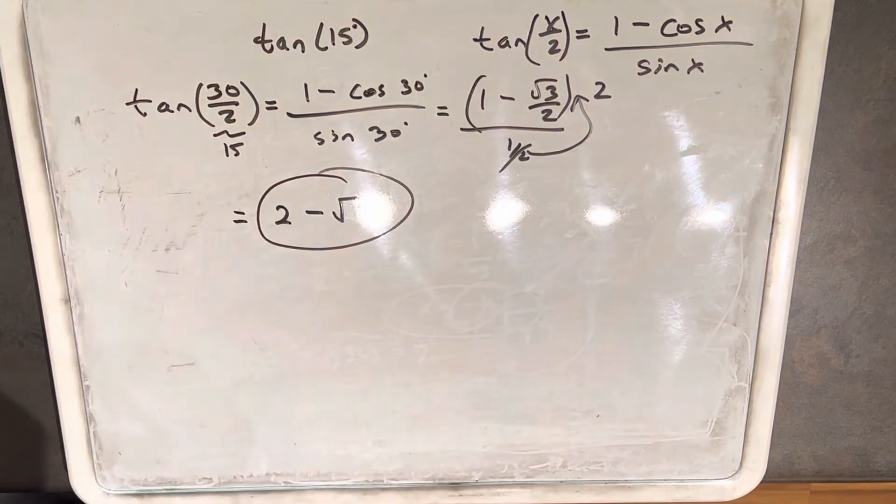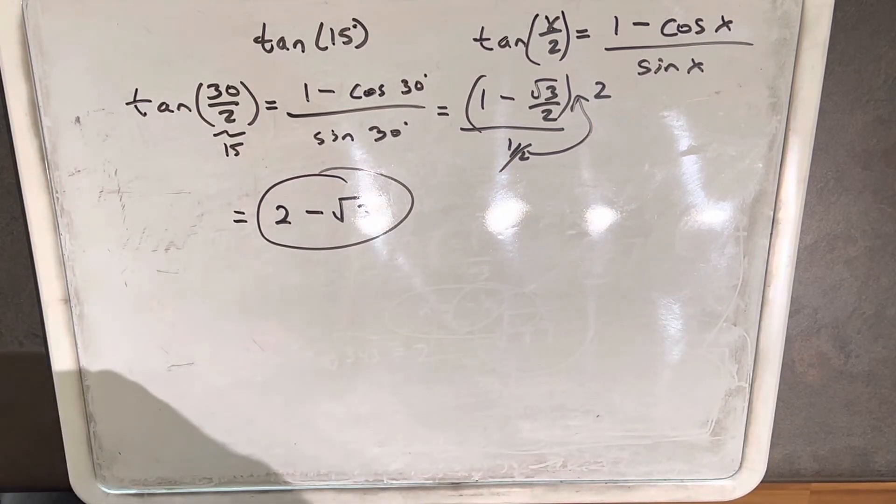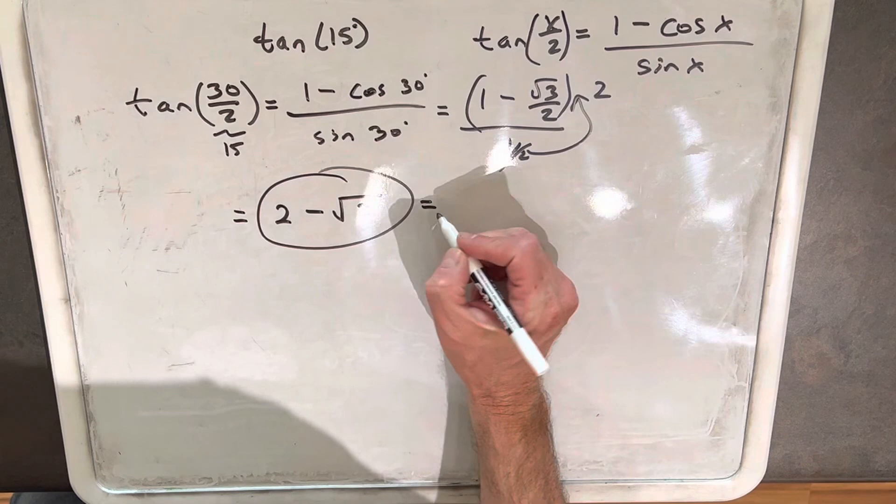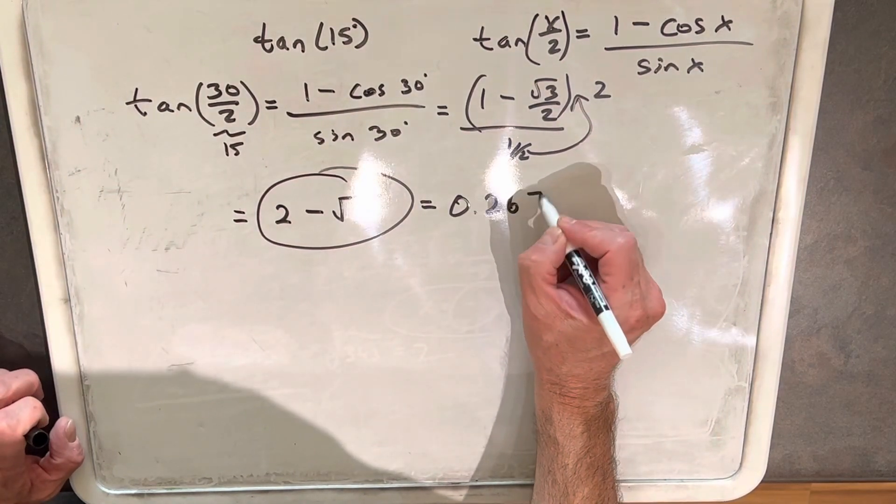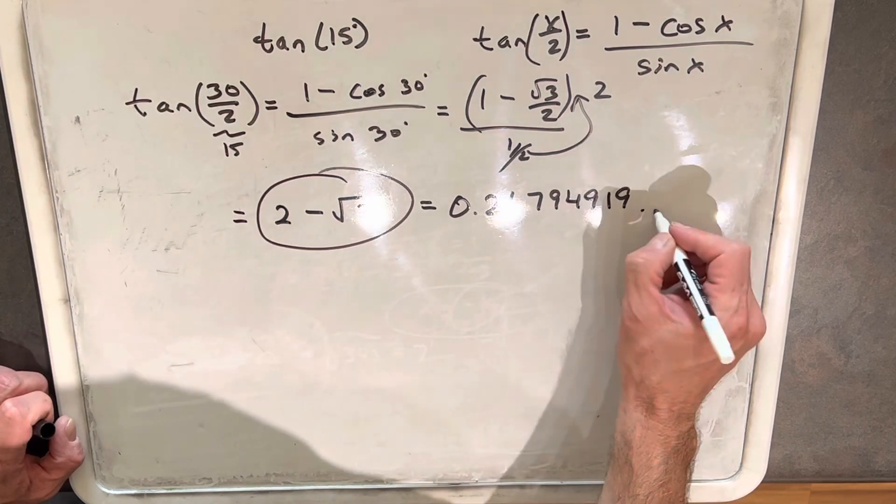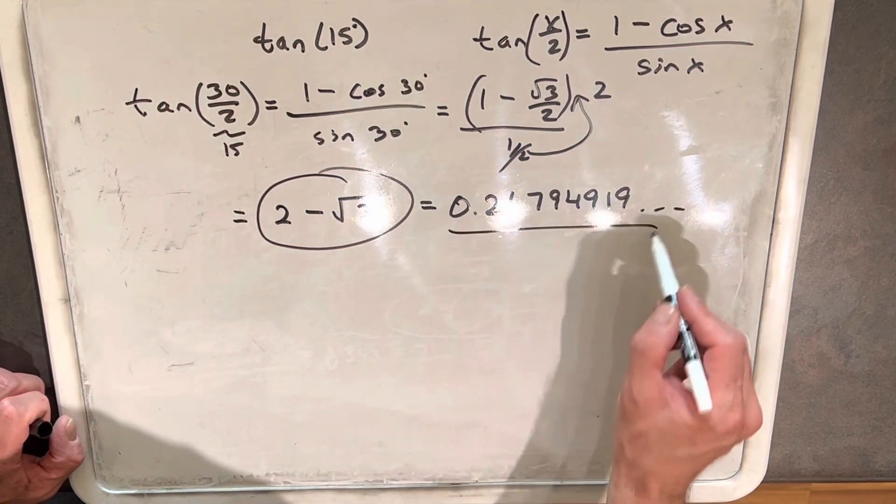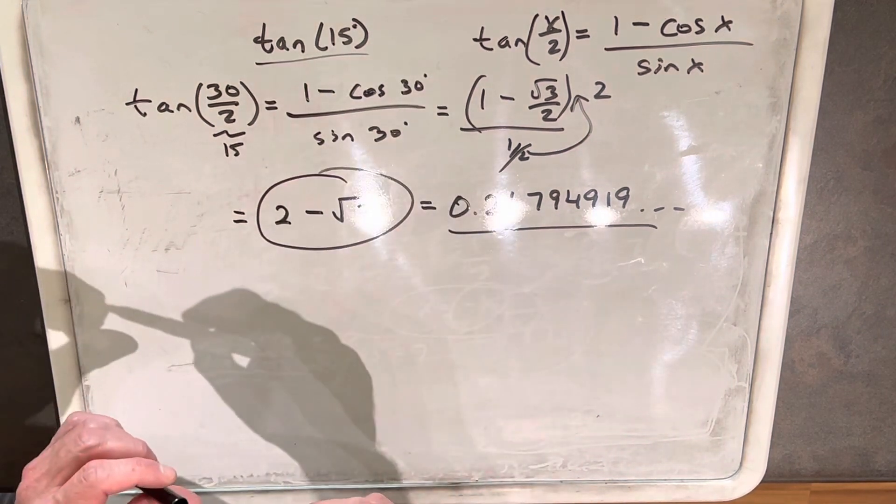And if you use a calculator, that value of 2 minus the square root of 3 when you use a calculator is actually something like 0.26794919, et cetera. And then if you also put in the value on the calculator, if you check for tan 15, it's going to be the same value.